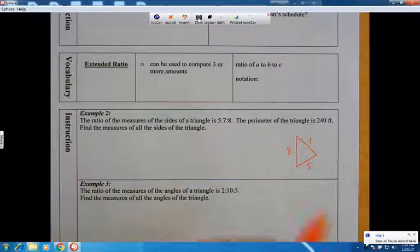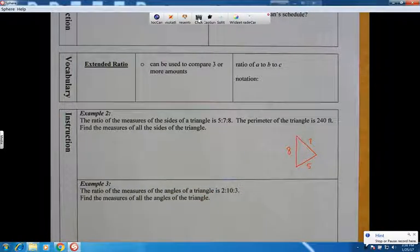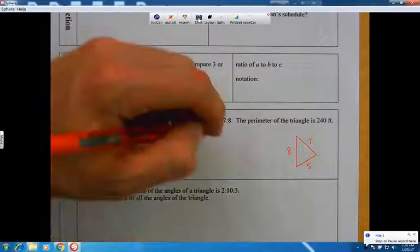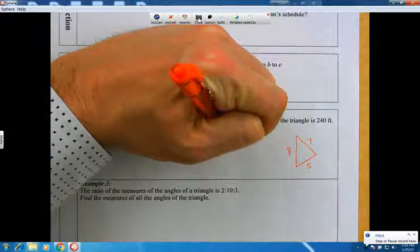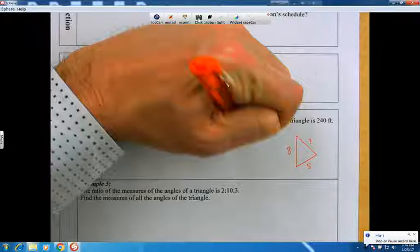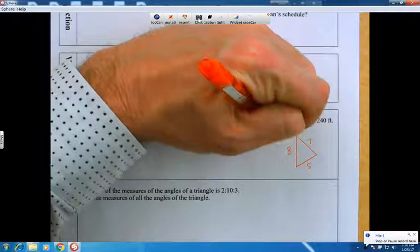And so what they're telling us is if we take this side, this side, and this side, and add those three things up, it will be 240. So I'm going to say that if we take the one side plus another one of the sides and add them up, they're telling us that it should add up to 240 feet.